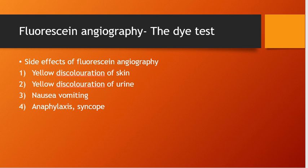Regarding side effects of fluorescein angiography: it is important to explain to the patient that the skin will appear yellow for one to two days and the urine will be discolored yellow, as the dye is excreted through sweat and kidneys. When the dye is injected, some people feel nauseous and some may vomit. It is always important to be prepared to manage syncope or anaphylaxis, which can rarely occur.